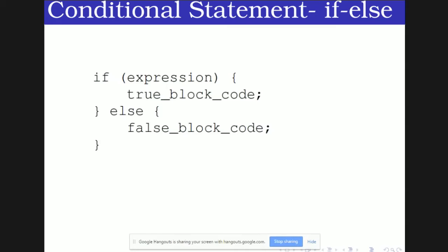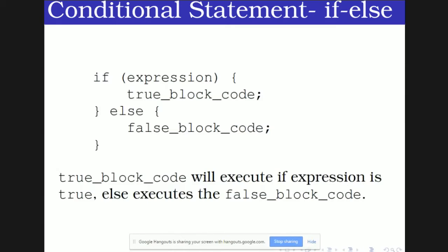Another type is if-else. Here we execute one set of statements if the condition is true, and a different set if the condition is false. If the expression is true, the true block executes. If the expression is false, it skips the true block and goes to the else block — the false block. This is used when we want to perform one of two tasks based on a condition.